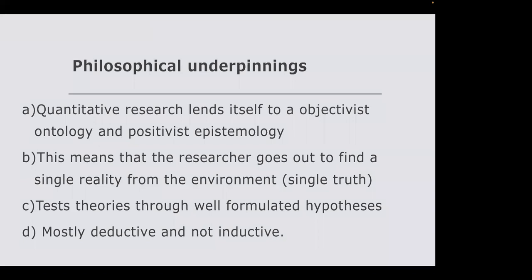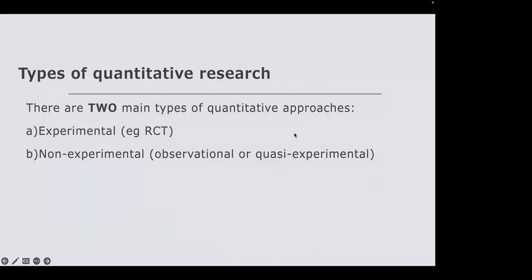Inductive reasoning is the predominant aspect of qualitative research, as you are looking at evidence from the ground up. There are many types of quantitative approaches: experimental and non-experimental. Non-experimental is also called observational, quasi-experimental, or natural experiments — you will find such terminologies used interchangeably.